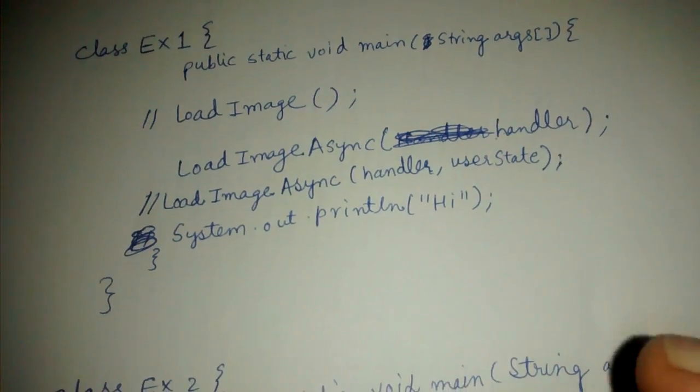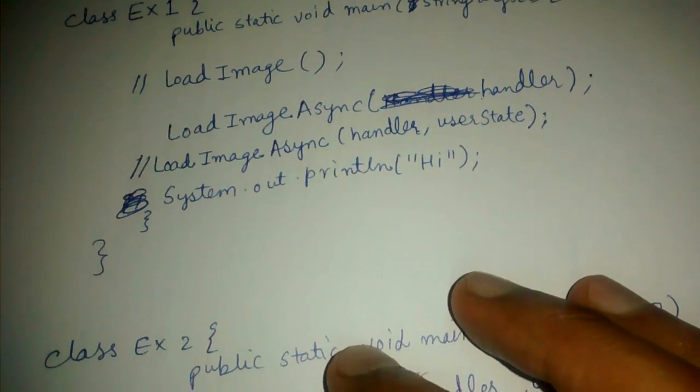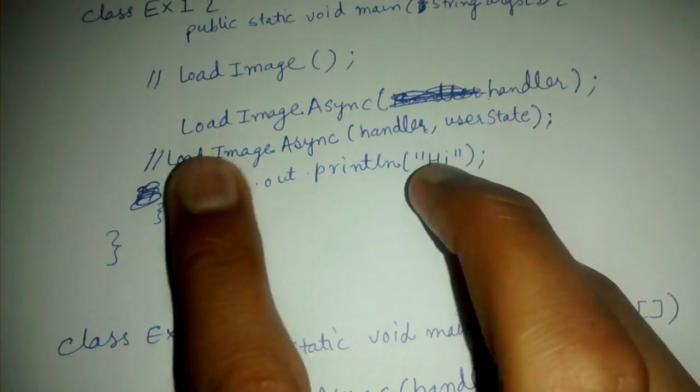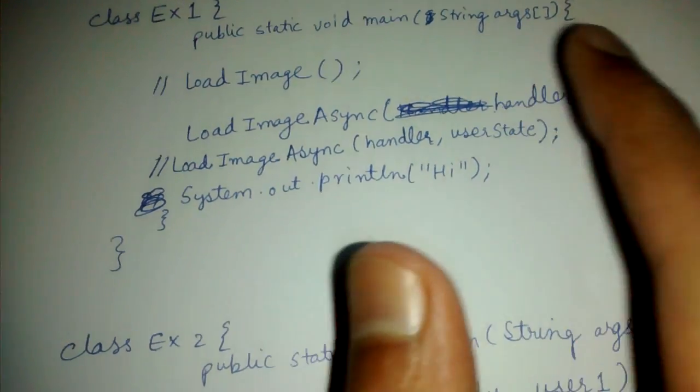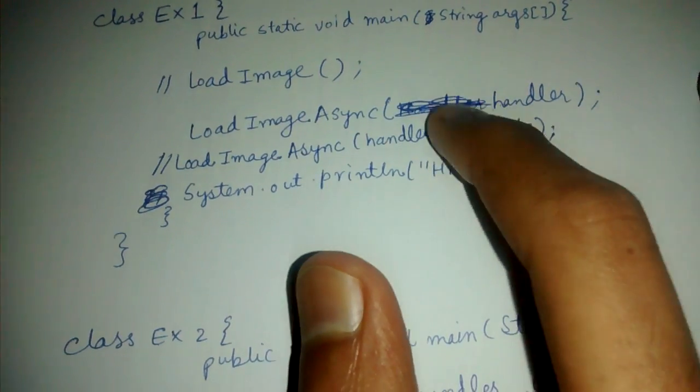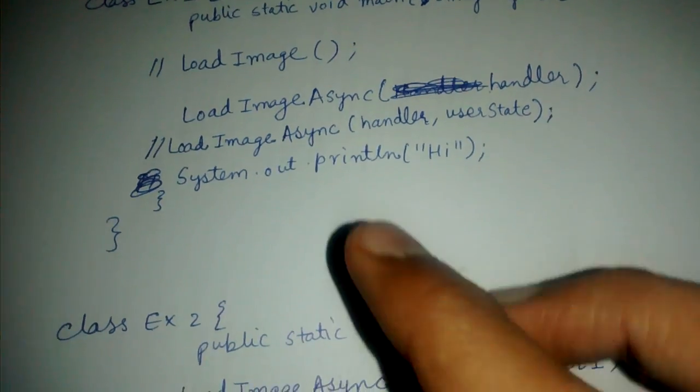So 'high' is immediately printed. It will not get stuck at this line. A new thread will be spawned and it will take care of loading the image, and we continue.